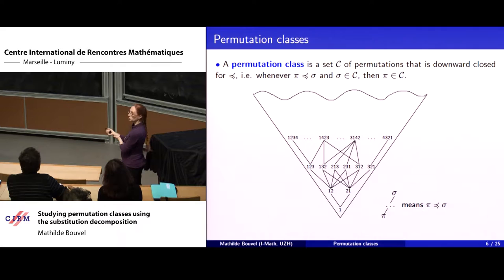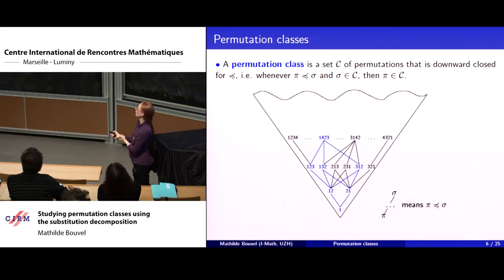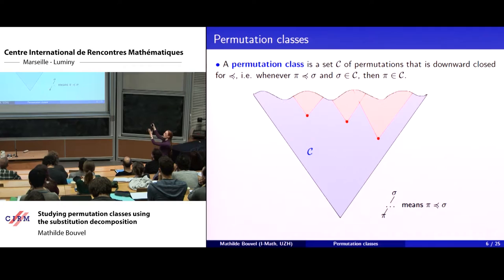The condition is that when you take a permutation in your class and a pattern of it, that pattern must also be in the class. If you think of the poset of all permutations with arrows indicating the pattern relation, and a permutation like 1423 is in class C, then everything below it must also be in C. A permutation class is the blue part of that poset. You take the whole cone and remove some cones — possibly infinitely many — and at the bottom of those removed cones you have what is called the basis of the class.